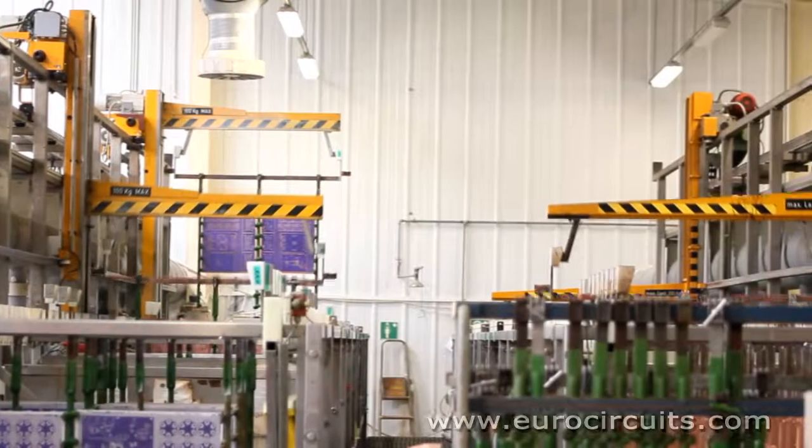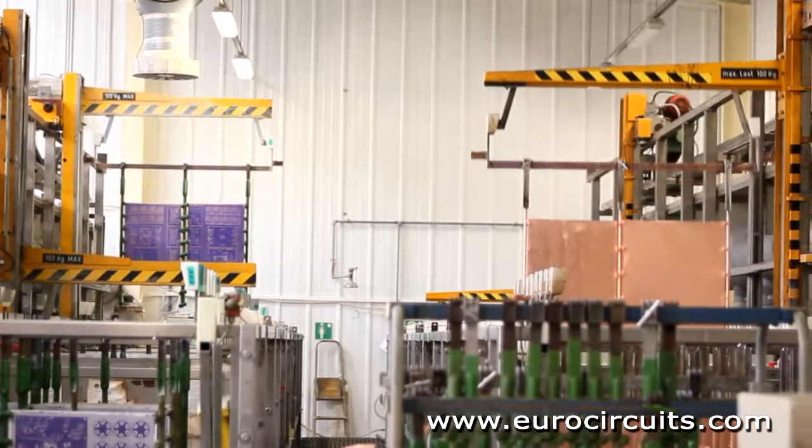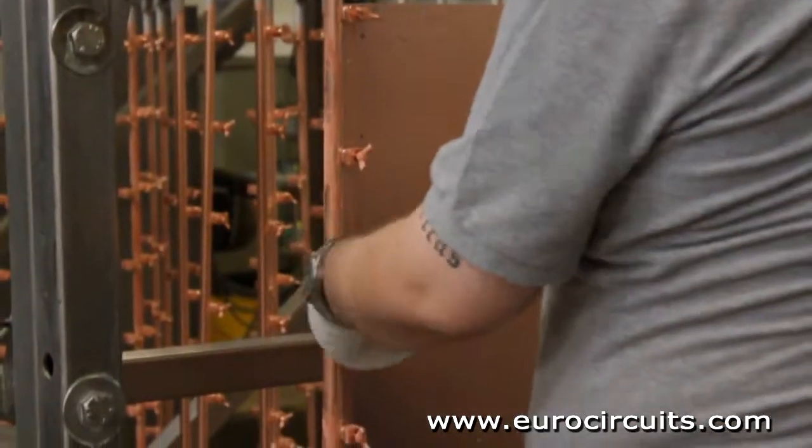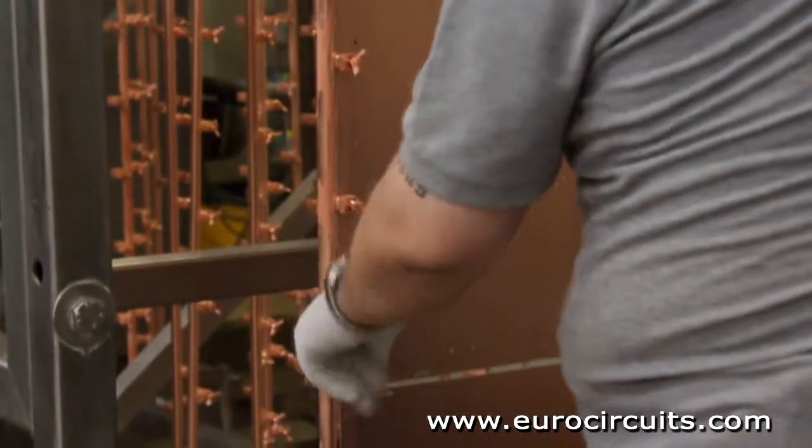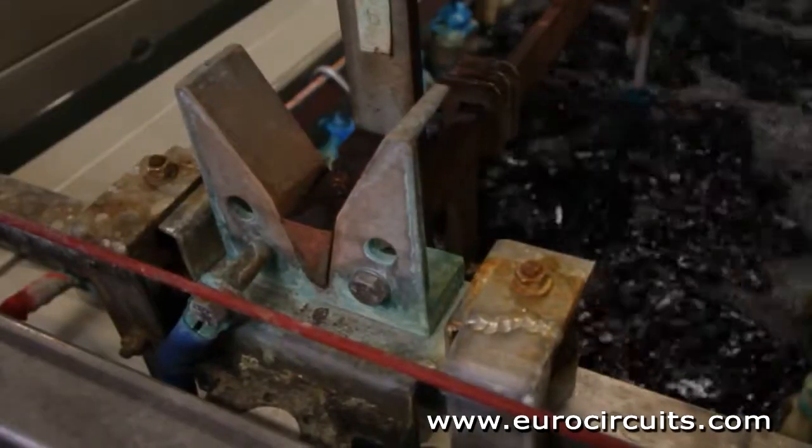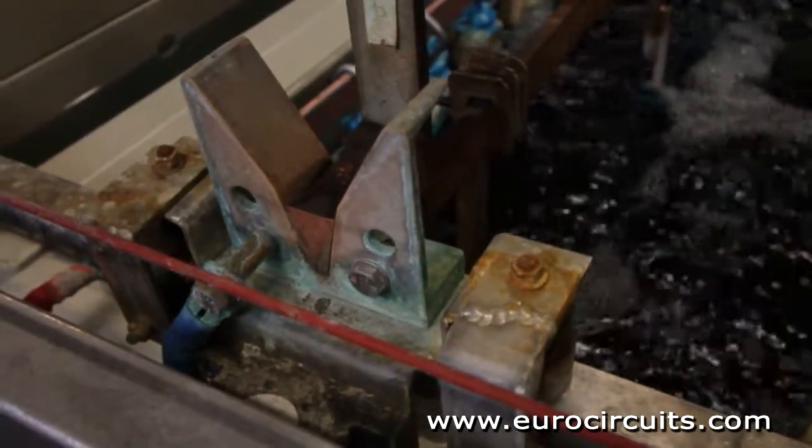Electroless copper. The first step in the plating process is the chemical deposition of a very thin layer of copper on the hole walls. The operator clamps the production panels into the jigs. The line is fully computer controlled and the panels are carried through a series of chemical and rinsing baths by the overhead crane.